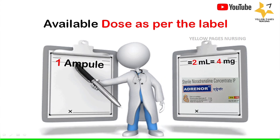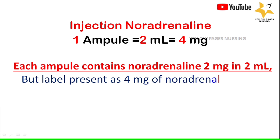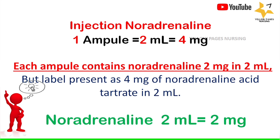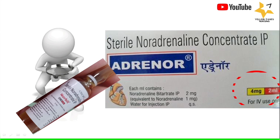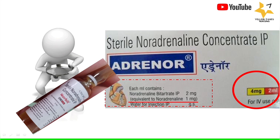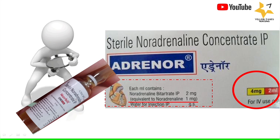Noradrenaline comes in ampoule form — one ampoule contains two ml which equals four milligram of noradrenaline acid tartrate. Each ampoule contains noradrenaline two milligram in two ml. As shown on the label, each ml contains noradrenaline bitartrate two milligram, which is equivalent to noradrenaline one milligram; hence noradrenaline two ml equals two milligram of strength.